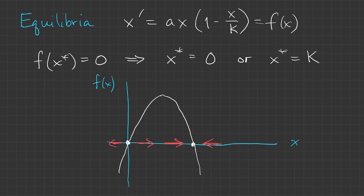When we look at increase and decrease, it becomes clear that the fixed point at K is stable, and the fixed point at the origin is unstable.